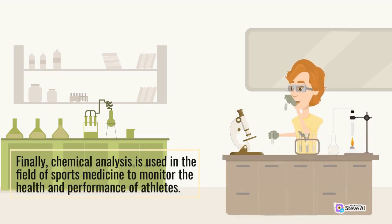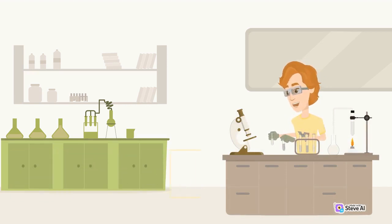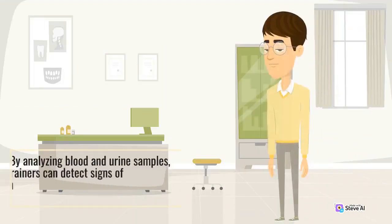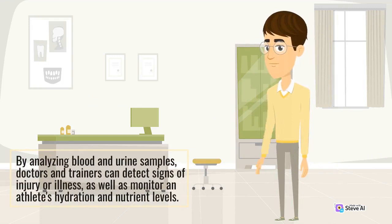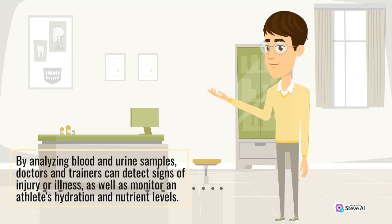Chemical analysis is used in the field of sports medicine to monitor the health and performance of athletes. By analyzing blood and urine samples, doctors and trainers can detect signs of injury or illness, as well as monitor an athlete's hydration and nutrient levels.